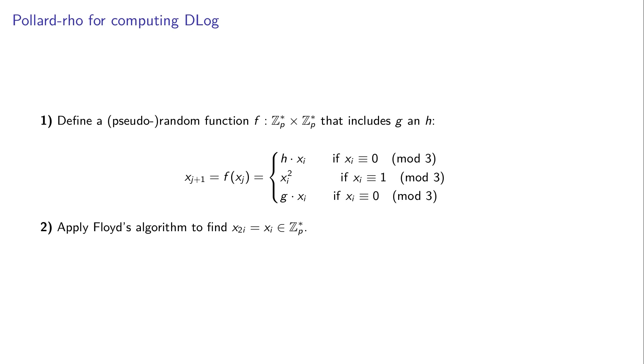We can combine these ideas to define an algorithm for computing discrete log. We define a random function on the multiplicative group Z_p^* that includes the values g and h from the discrete log problem. This relatively simple random function is sufficiently random to have the statistical properties presented earlier.